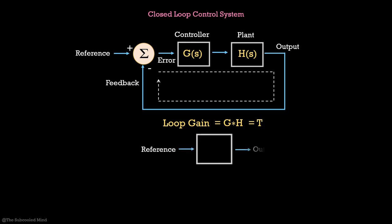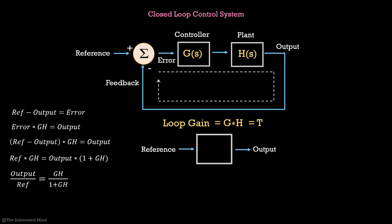We can convert this closed loop system to an open loop system using some calculations. Or in other words, the transfer function from reference to output is T upon 1 plus T. Pause here to look at these calculations. Now, it is not easy to find poles of T upon 1 plus T if you do not have any mathematical tool.